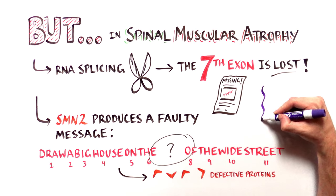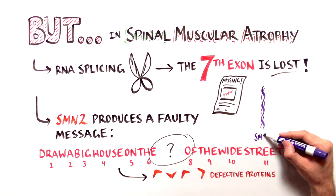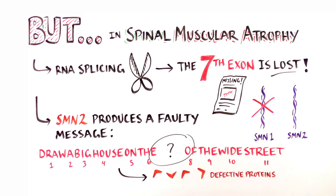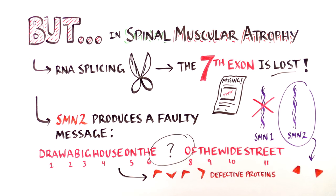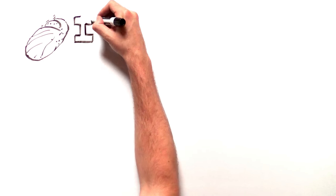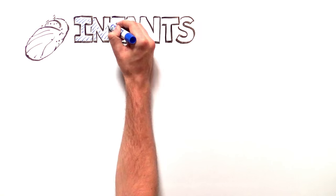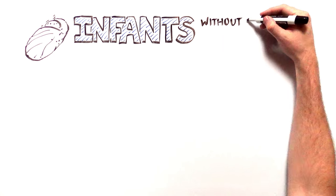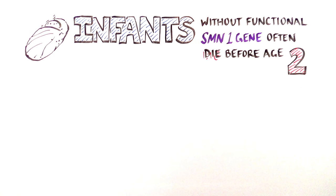SMA patients have to rely solely on the SMN2 gene to produce the survival of motor neuron protein. But due to exon skipping, not enough usable protein is made to support normal muscle development. Infants born with the most severe form of SMA often don't make it to their second birthday.